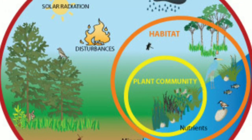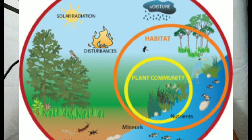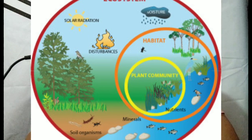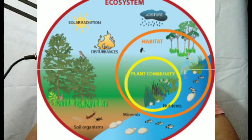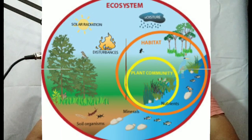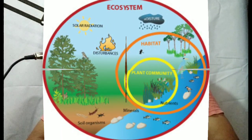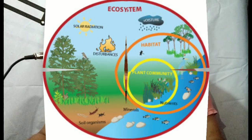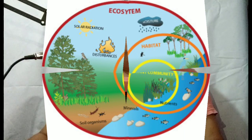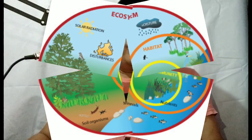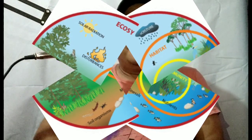Our topic today is about ecosystem. What is an ecosystem? An ecosystem is an interaction between plants, animals, and microorganisms and their environment. All things in an ecosystem — living and non-living — work together to be one functional unit. All living organisms in an ecosystem depend on each other for survival. This means these organisms are interdependent.